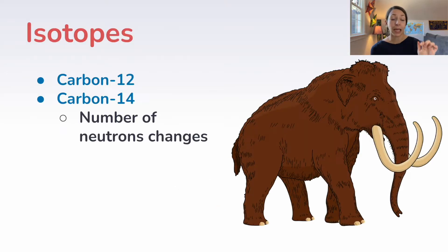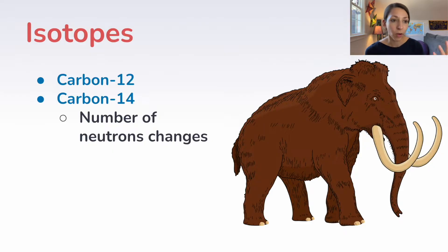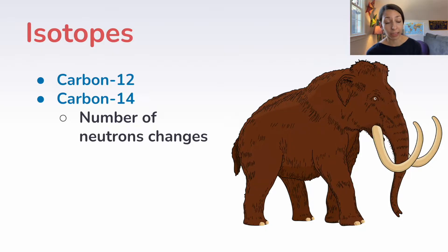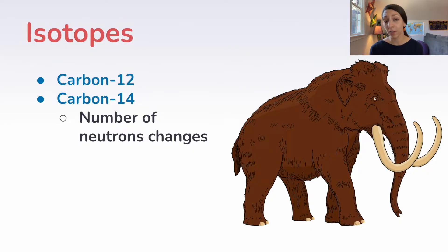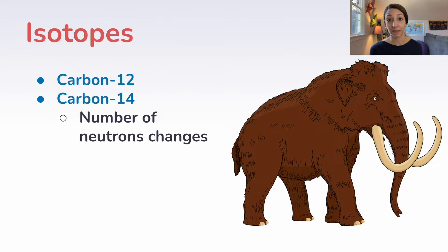Really quick before we talk about bonds — isotopes are different versions of elements. Carbon-12 might be the common one we just saw, but carbon-14 is going to have a different number of neutrons. These are different versions of elements with different numbers of neutrons, and that influences the atomic mass. Some isotopes are radioactive, like carbon-14. They decay over time, and we can use the half-life of these elements to determine the age of things like fossils — for example, carbon-14 dating to determine the age of a mammoth.